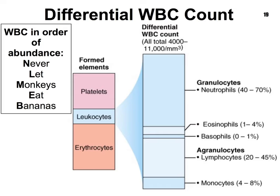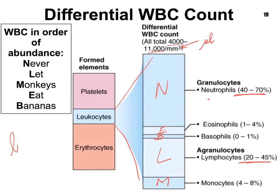Be careful not to confuse the term lymphocyte with leukocyte. The term 'leuko' literally means white, so this helps you remember that leukocytes are white blood cells. Don't confuse them with lymphocytes, which are a type of white blood cell.